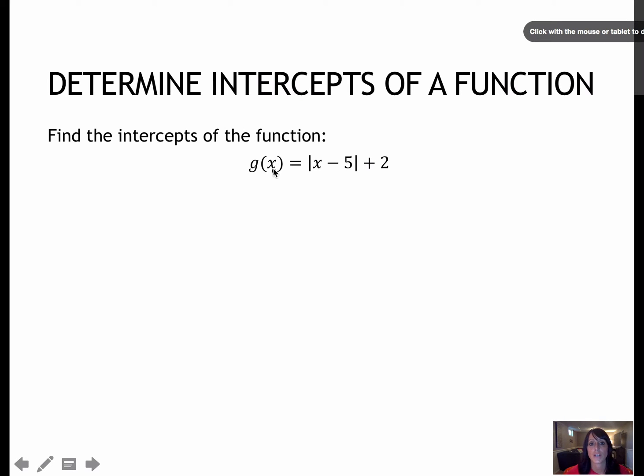Next, I have a function g of x, so one time I'm going to set 0 for g of x, and the other time I'm going to find g of 0, which means 0 minus 5 plus 2. For this one, I would subtract the 2, so I would have negative 2 equals the absolute value of x minus 5. That doesn't work, because I can't have an absolute value equal to a negative, so there would be no x-intercepts.